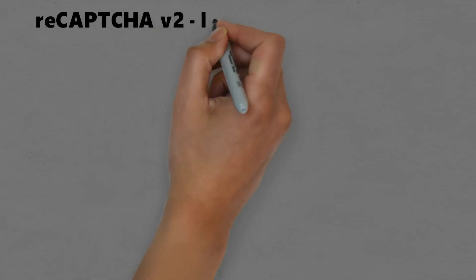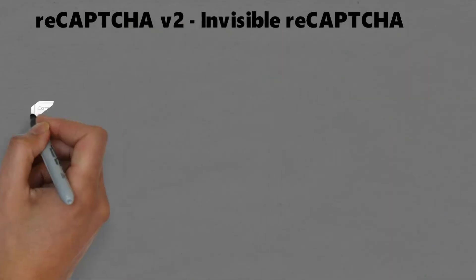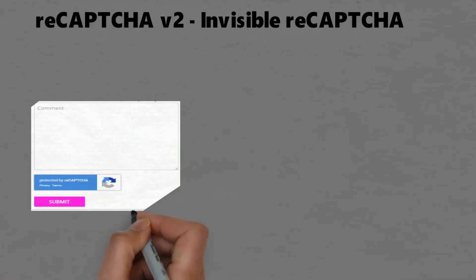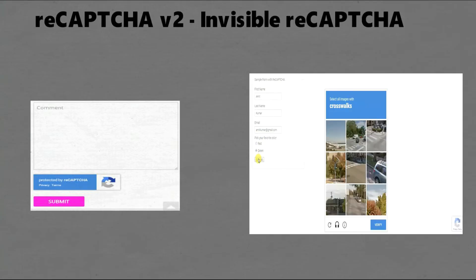Now we will discuss Invisible reCAPTCHA. In Invisible reCAPTCHA there is no checkbox — the user does not need to click one. Instead, it is invoked directly when the user clicks on an existing submit button on your site. Whenever a user clicks the submit button, suspicious users will get a challenge to solve the CAPTCHA.